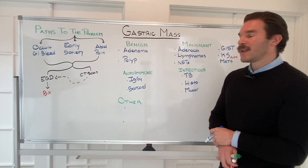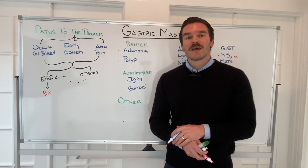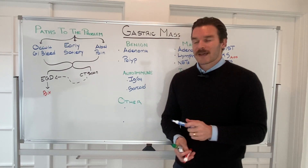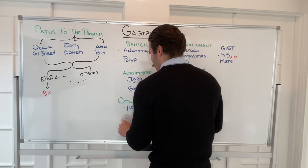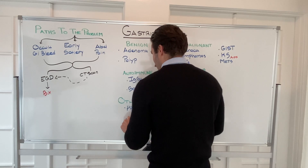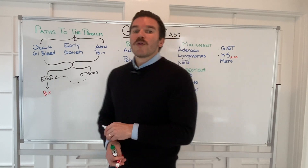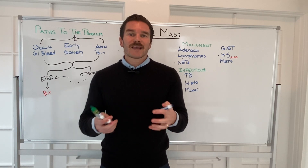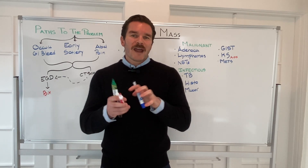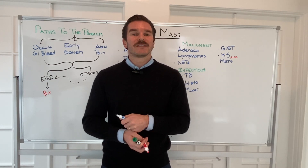Finally, in the 'other' category are diseases that don't fit discrete categories but can still cause a gastric mass. The two worth mentioning are peptic ulcer disease and amyloid. A gastric ulcer can provoke a large inflammatory response with raised edges, creating an inflammatory mass that mimics other diseases.